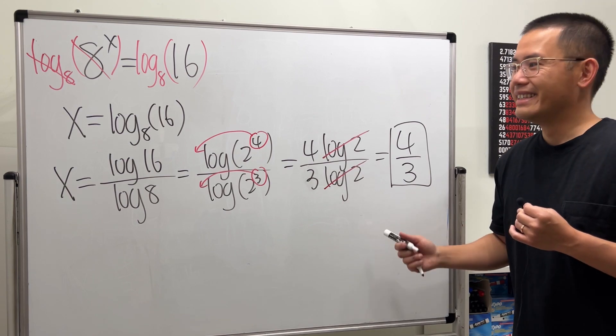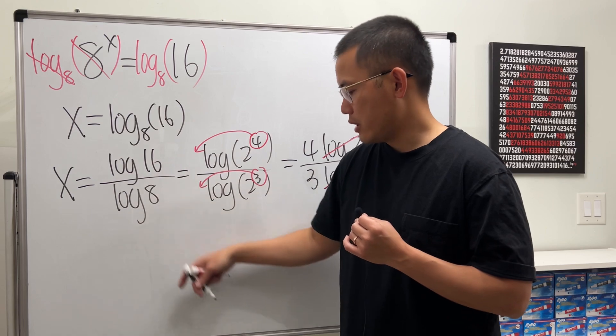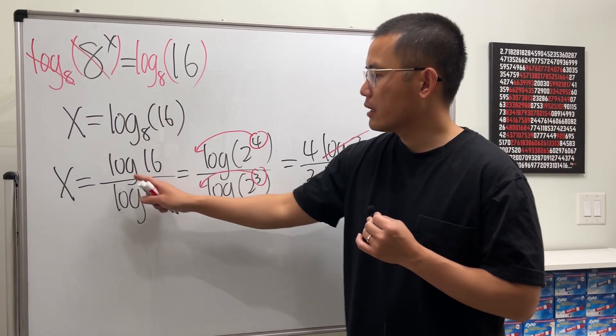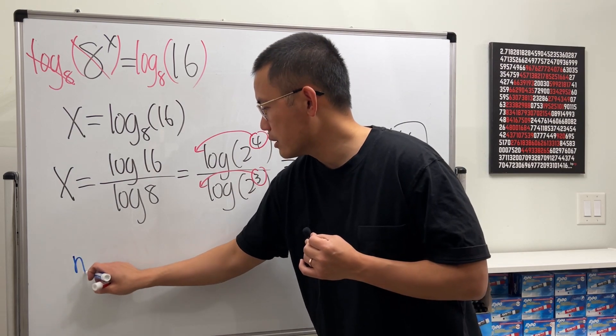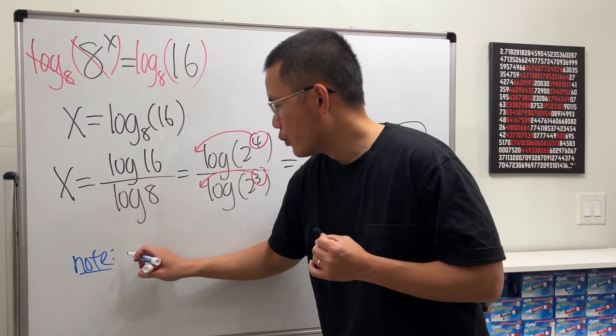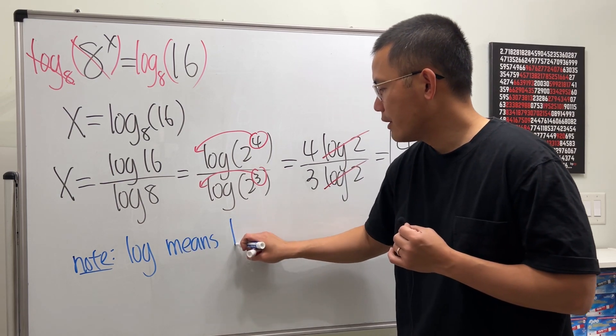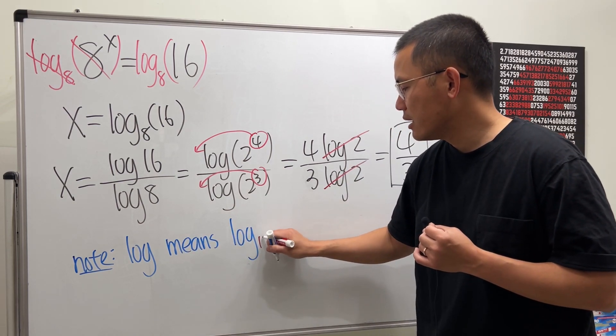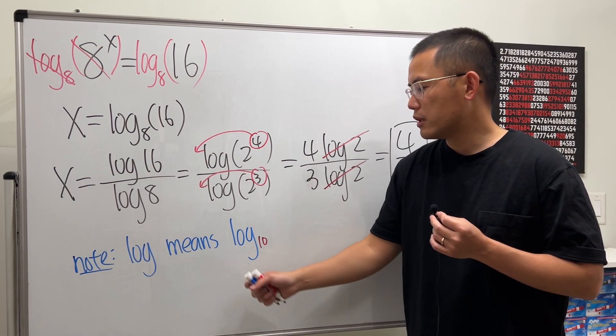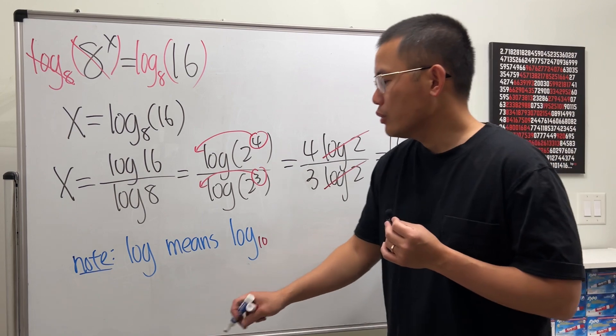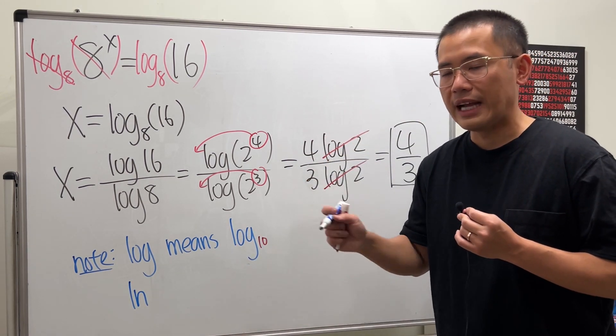Just like this. So the key right here is that we can use the change of base formula to go from here to here. And the reason I pick the regular log on the calculator, this is L-O-G, so I'll make a note right here. When we have L-O-G, this log, this means we have log with base 10. Especially if you use a regular scientific calculator or a graphing calculator, it means log 10. But in fact, you can also have used the L-N log on the calculator, and that's the natural log.